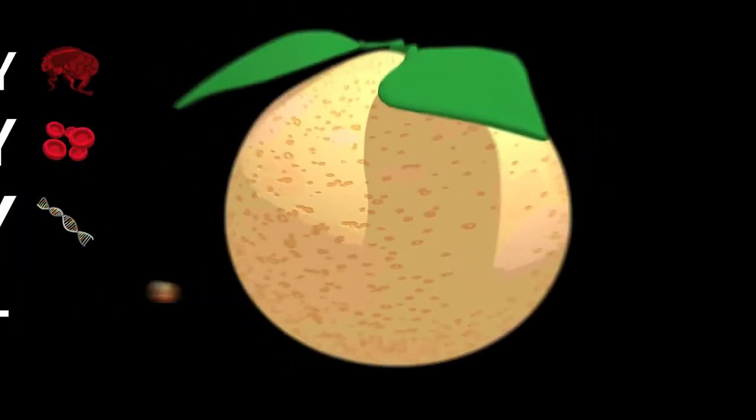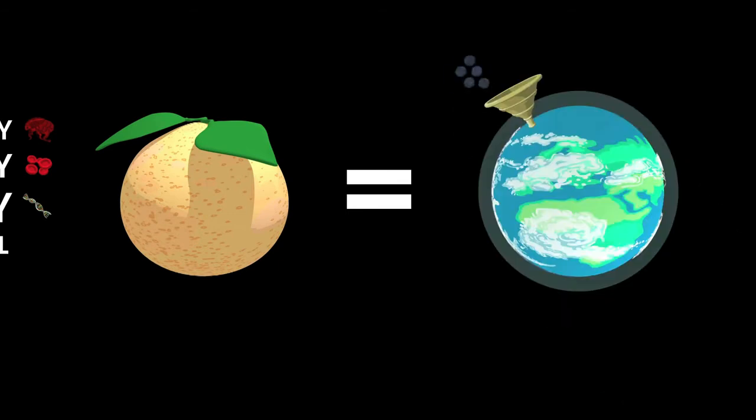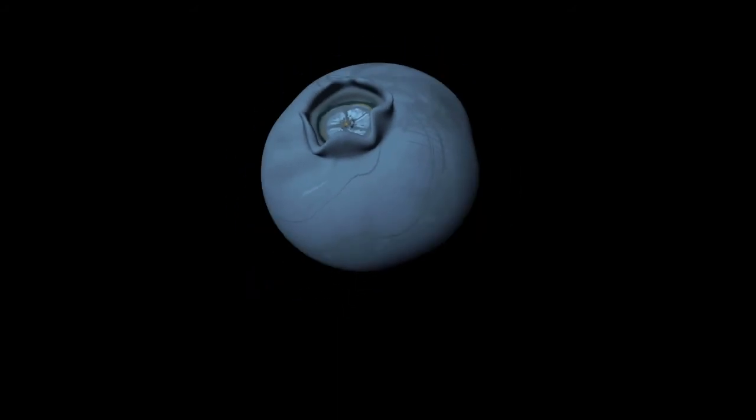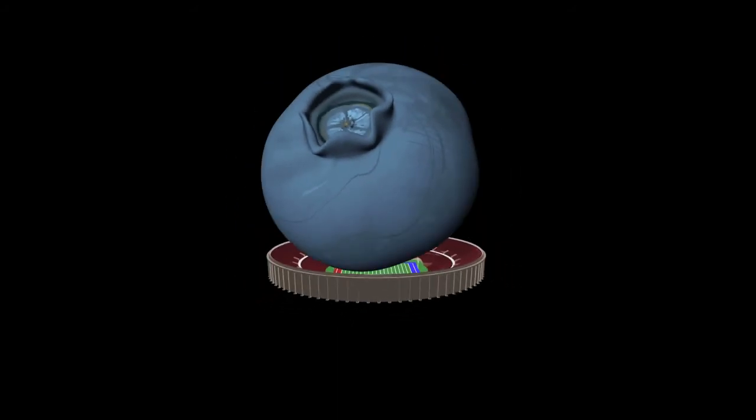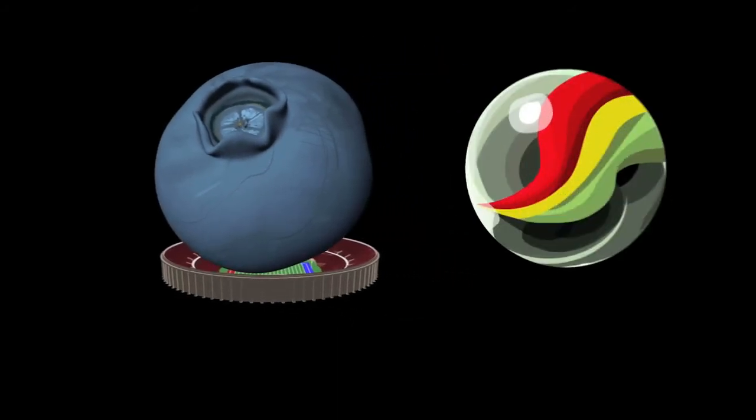Think atoms in a grapefruit like blueberries in the Earth. The nucleus is crazy small. Now look inside the blueberry and blow it up to the size of a football stadium, and now the nucleus is a marble in the middle.